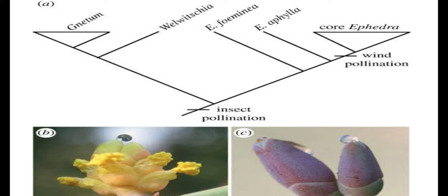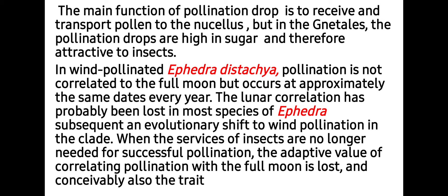Some species like Ephedra aphylla and Ephedra foeminea show insect pollination, while Welwitschia again shows insect pollination. The main function of the pollination drop is to receive and transport pollen to the nucellus. In Gnetales, the pollination drops are high in sugar and therefore attractive to insects. In wind-pollinated Ephedra distachya, pollination is not correlated to the full moon but occurs at approximately the same dates every year. The lunar correlation has probably been lost in most species of Ephedra subsequent to the evolutionary shift to wind pollination, when the surface of the insect is no longer needed for successful pollination.